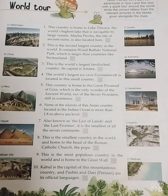Fifth: this country is home to the Great Pyramid of Giza, which is the only wonder of the ancient world — out of the seven wonders — still in existence. Yeh desh Giza ka mahan pyramid ka ghar hai, jo purani duniya ka sirf ek, saat ajoobon mein se ek hai jo aaj bhi hai. Your answer is D — Egypt.